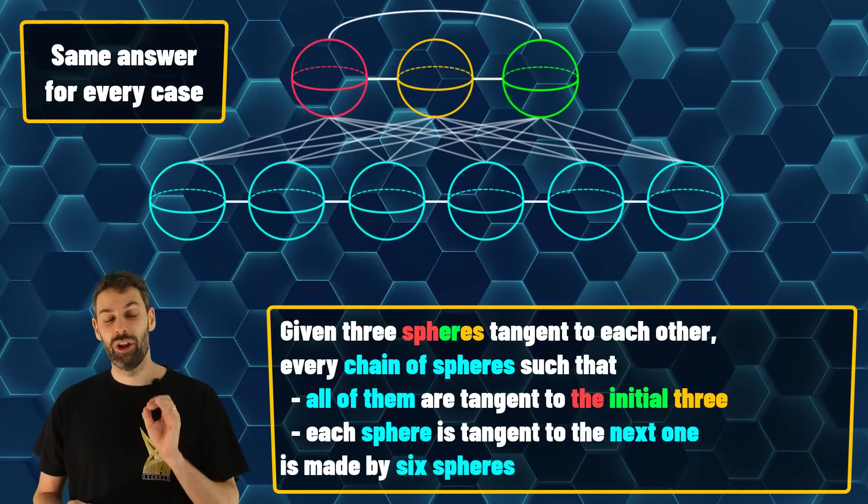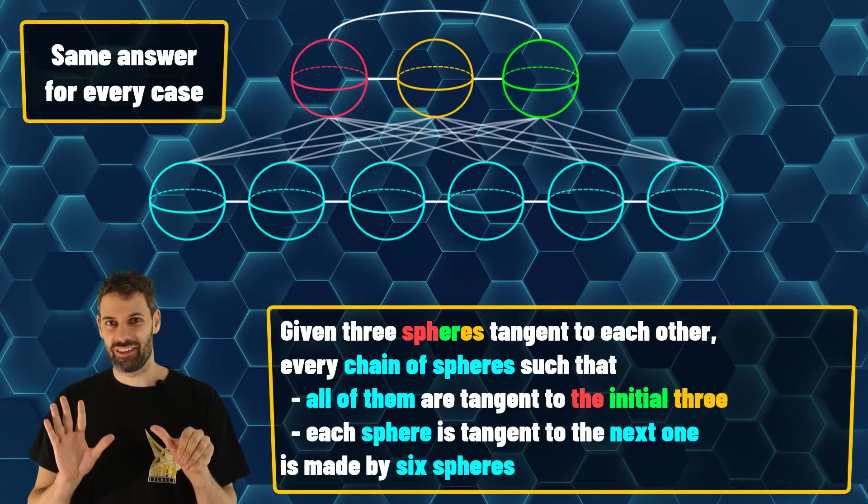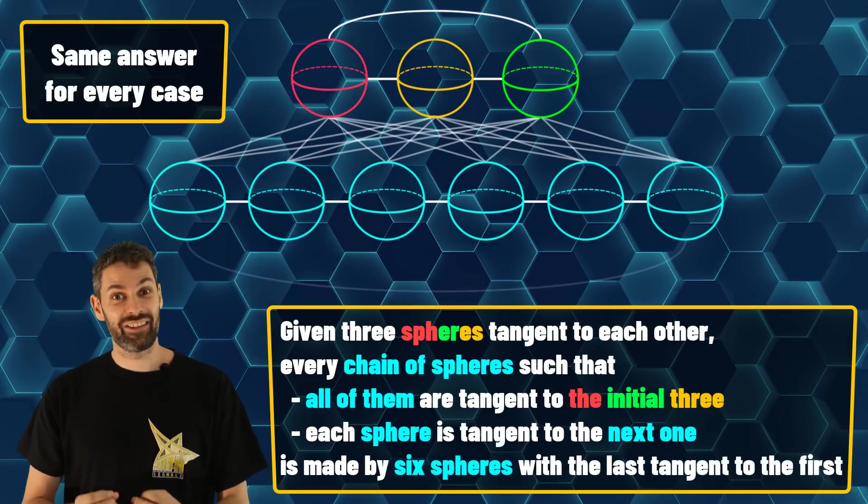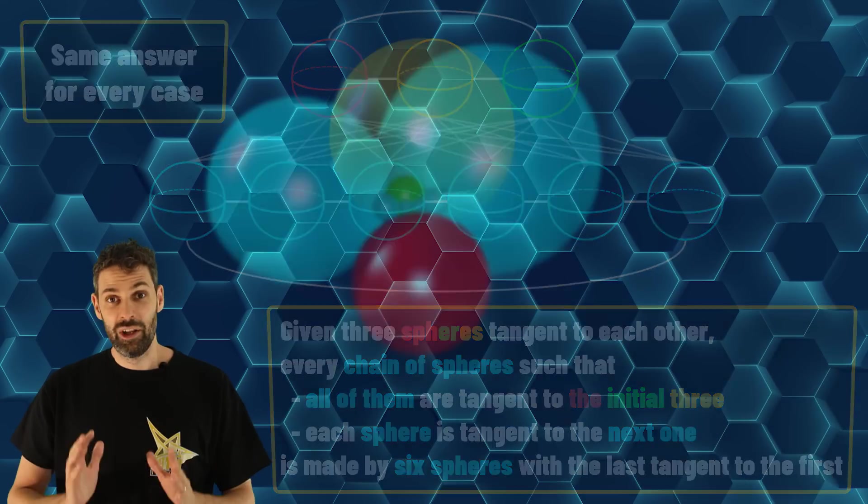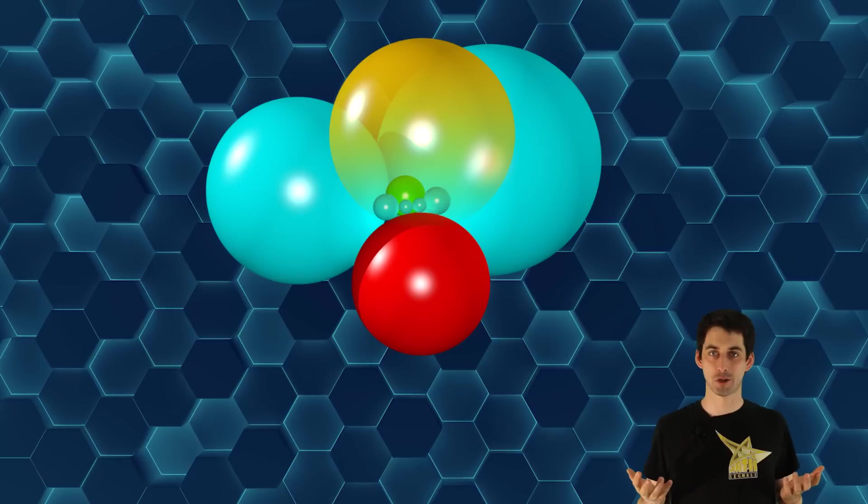More, it has always six spheres. More, the last blue sphere is always tangent to the first. Look at this example. What a beautiful picture.